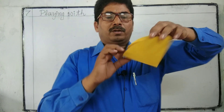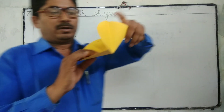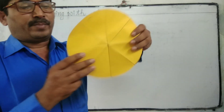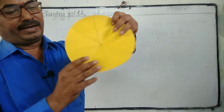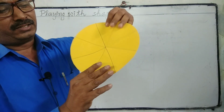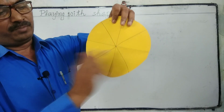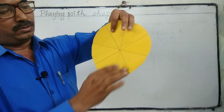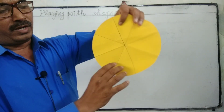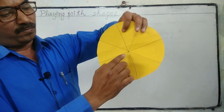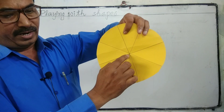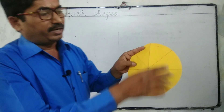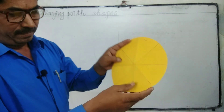When we open the circular sheet, all the fold lines meet at one point. This point is called the center of the circle.